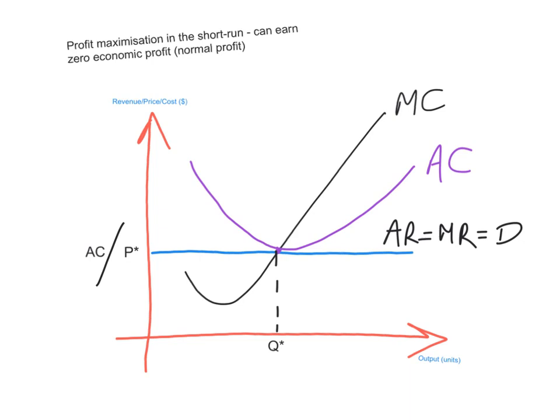The last possible short-run scenario: a profit-maximizing perfectly competitive firm can also earn zero economic profit, or just a normal profit. The intersection of marginal cost and marginal revenue gives Q star, and here the average cost curve intersects the marginal cost curve at the same point — so price equals average cost. We say the firm is earning a normal profit because the opportunity cost (an implicit cost) is included in the firm's total costs.